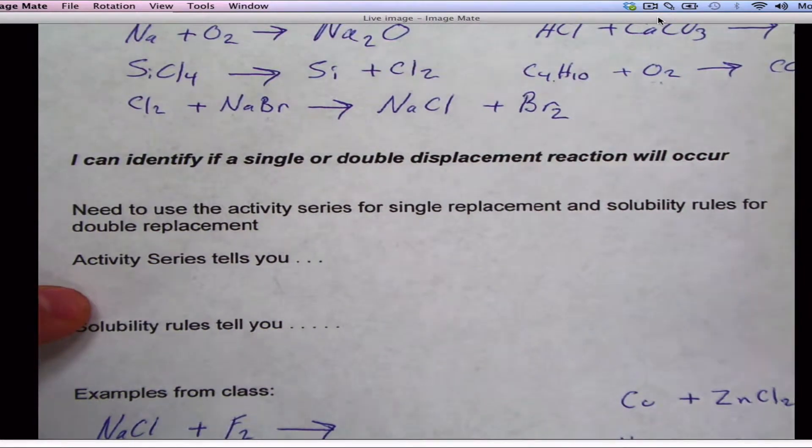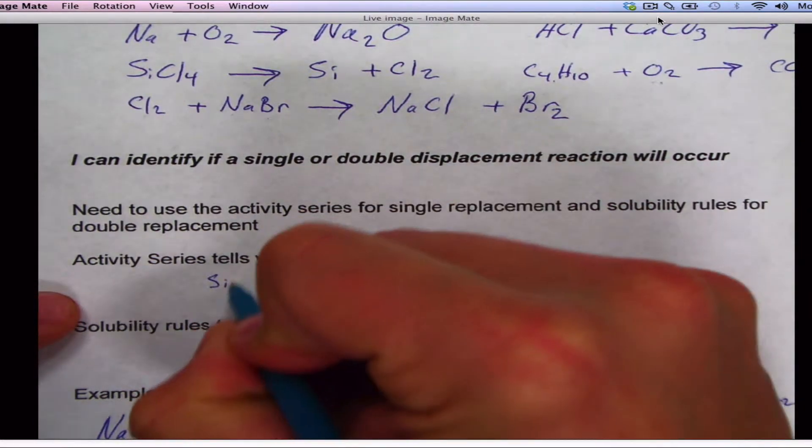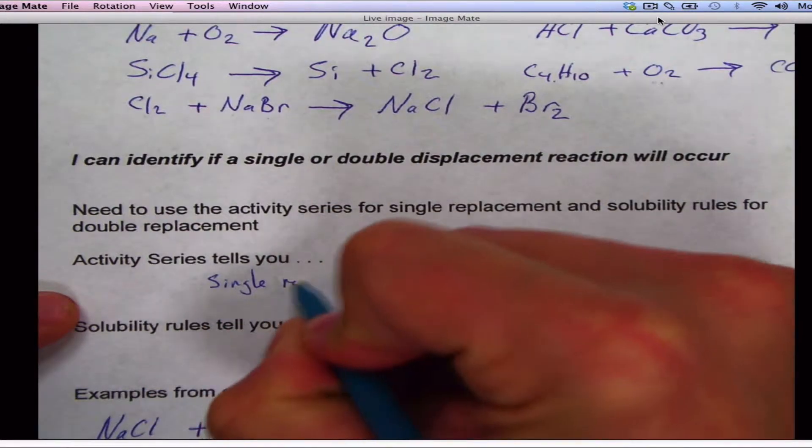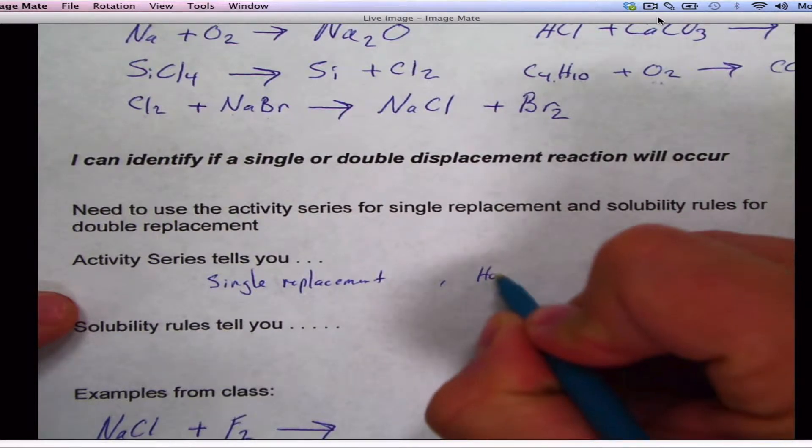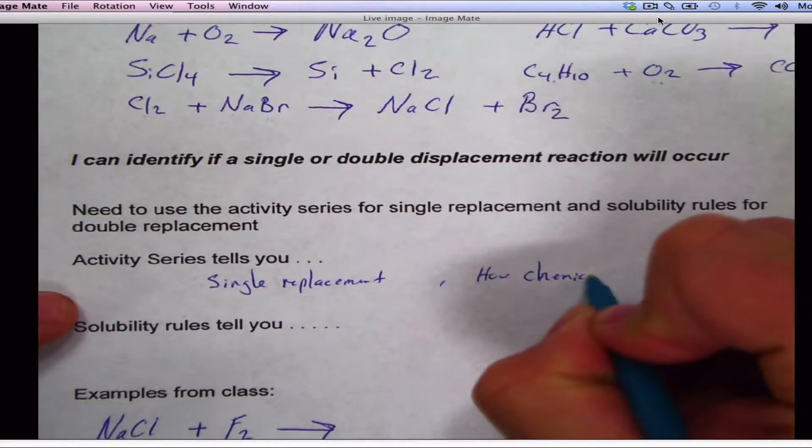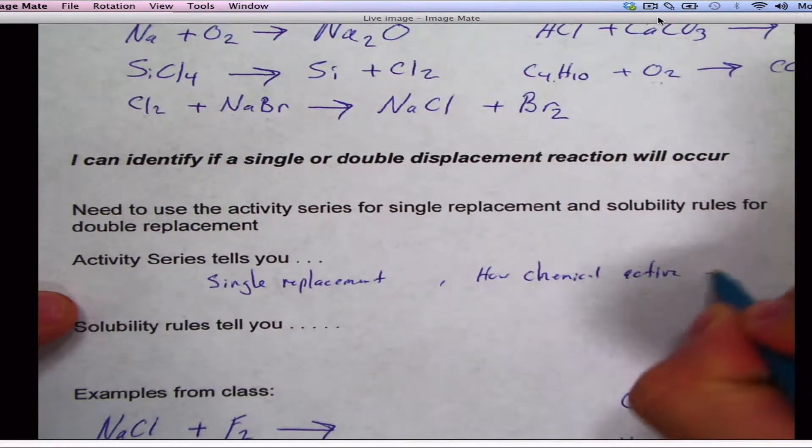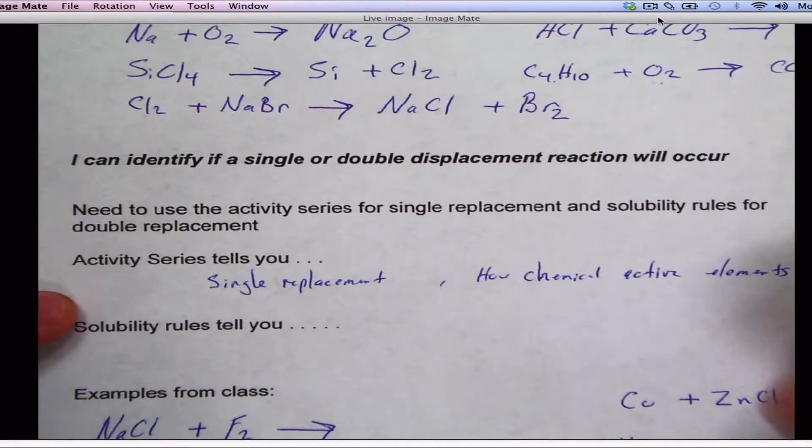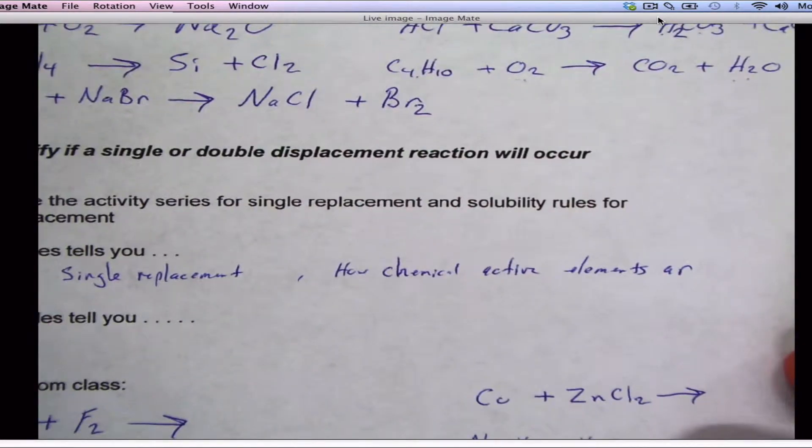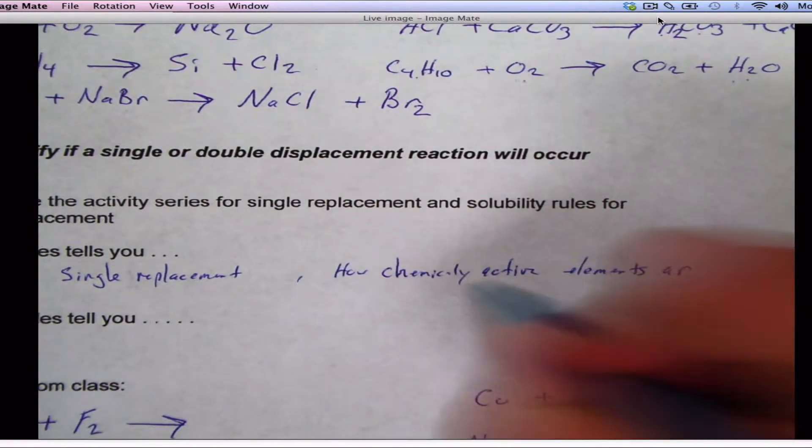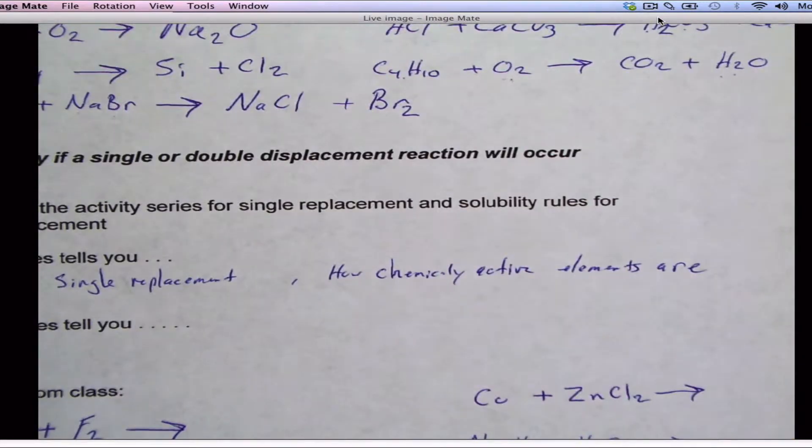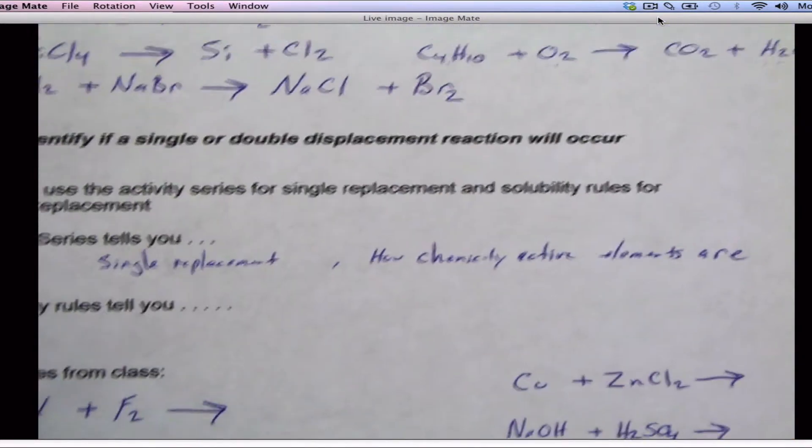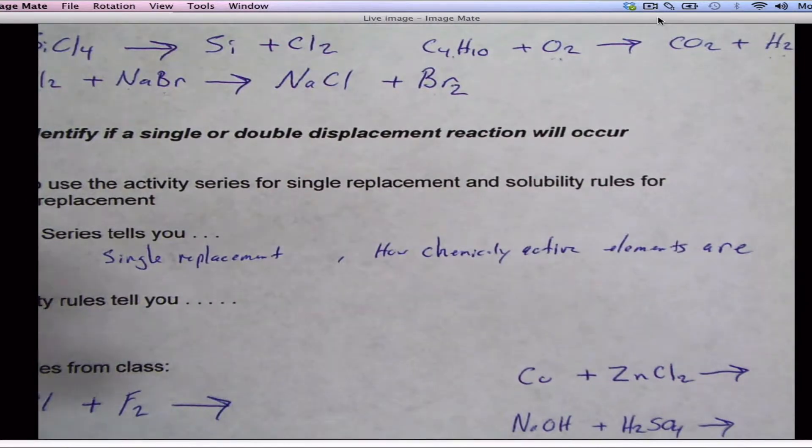So, activity series, it's for single replacement reactions. And what it tells you is how chemically active elements are. Alright, and this is going to be important because it's going to tell you if the reaction is going to take place or not. Because sometimes there might have two things you put together and they might not react. And the question is, well, why? Why don't they react? Well, because it's not more chemically active than what it should be.